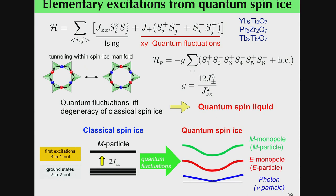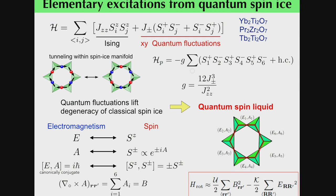As a result, quantum fluctuations dramatically change the elementary excitations. In addition to the M-particle excitations, an electric monopole — I call this the E particle — and photons — I call this the μ particle — emerge from the quantum spin-ice manifold. This is obtained from this kind of Hamiltonian.